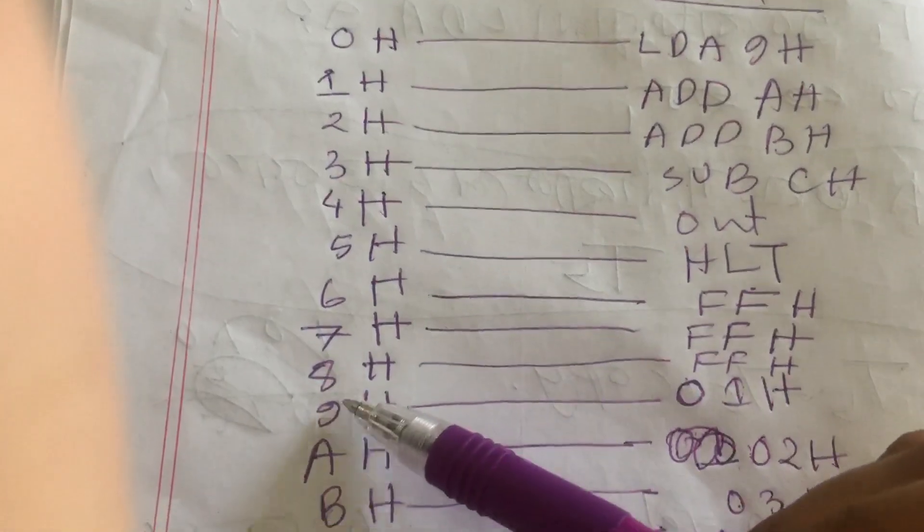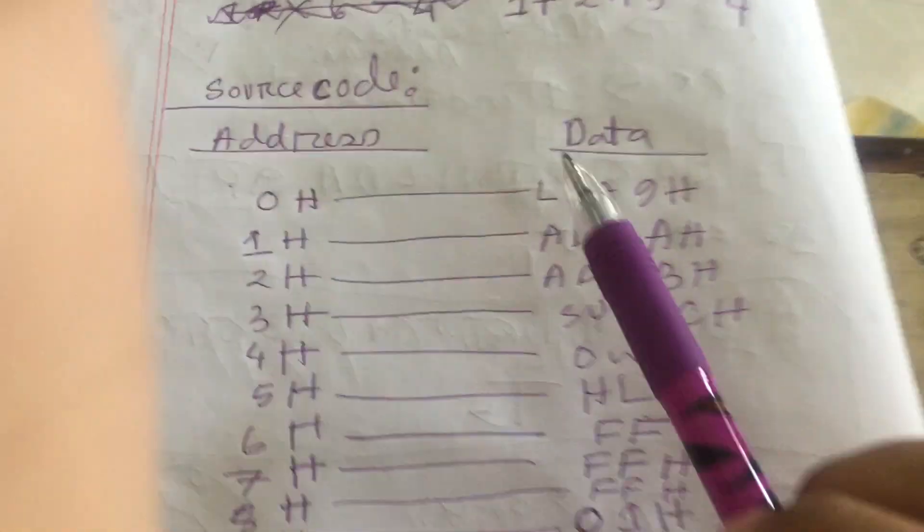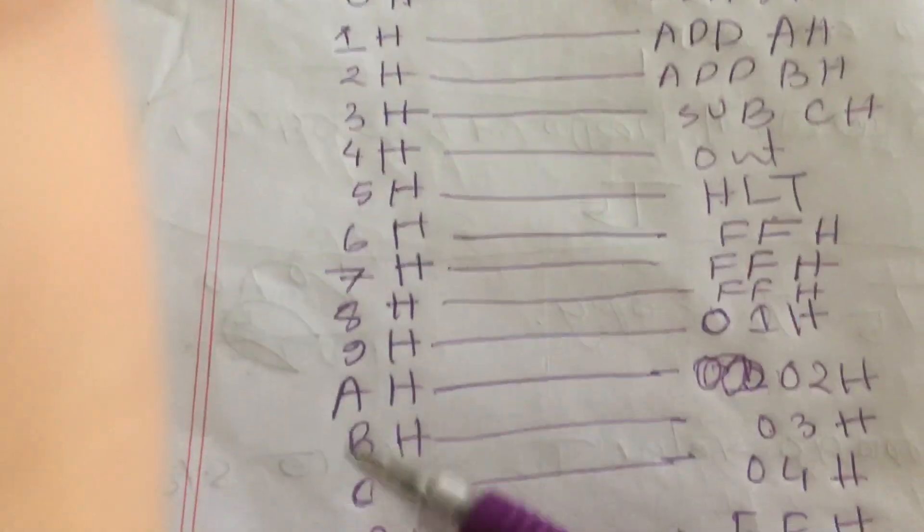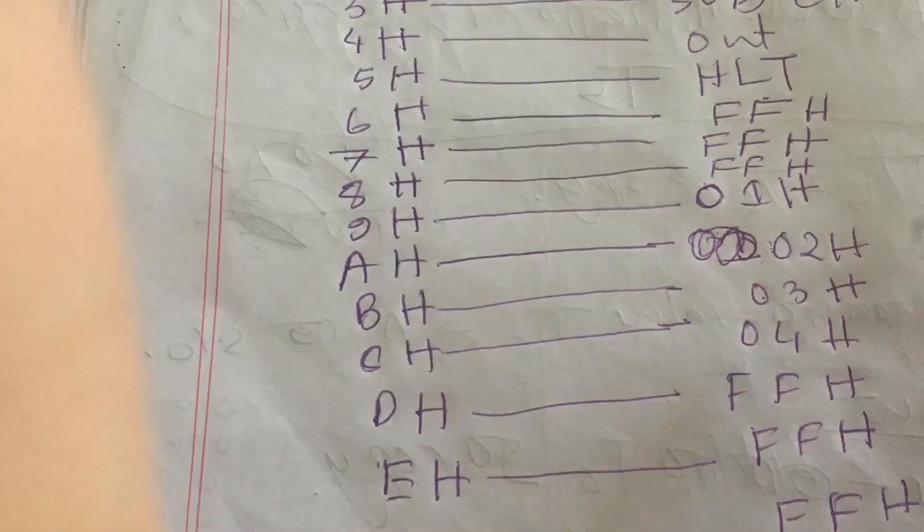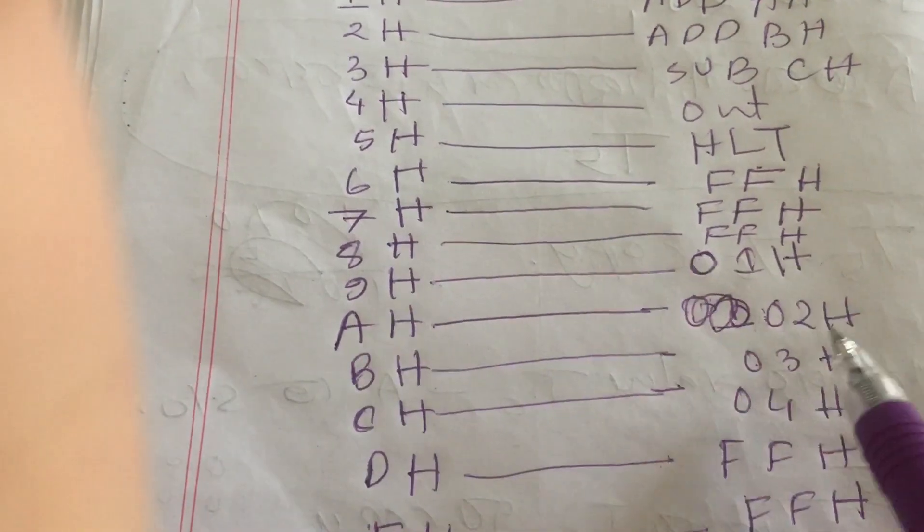So after 9 it will be like A, B, C, D, E, F H. And then we have to load these numbers in the lower part of the registers.